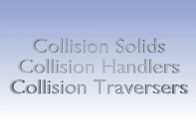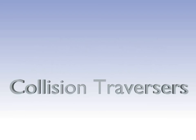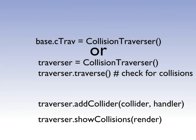Collision traversers. Collision traverser is what actually checks for collisions for the given collider using the given handler. Usually you will create a collision traverser object and assign it to base.cTrav. This will cause the collisions to be checked every frame automatically. You can assign it to your own variable, but then you'll need to run traverser.traverse every frame manually by using a task. You can use more than one collision traverser. To assign a collider and a handler to a traverser, use traverser.addCollider(collider, handler).